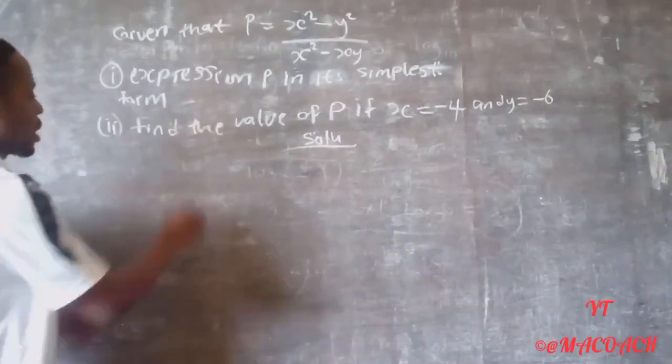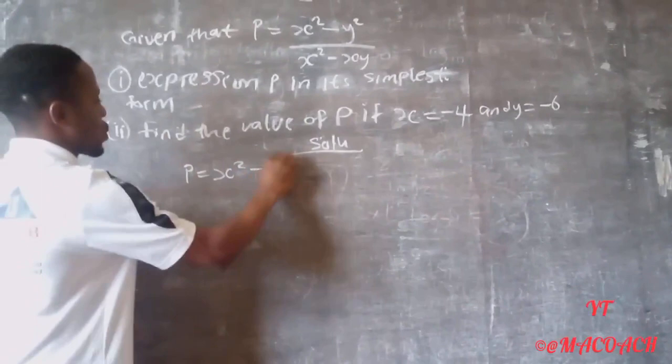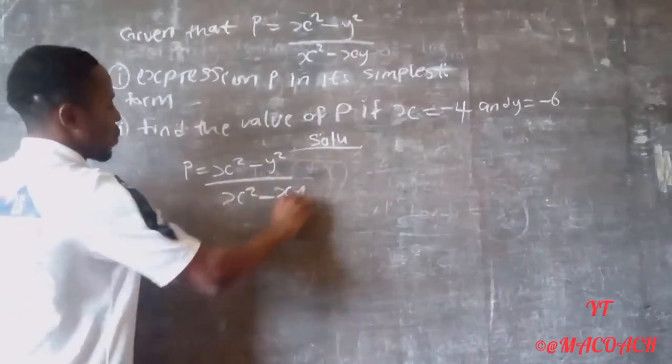Let's write the equation. P equals S squared minus Y squared divided by S squared minus SY.